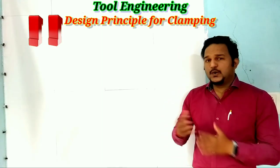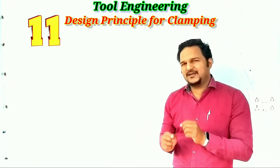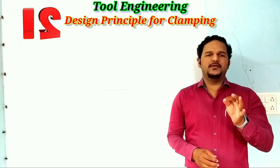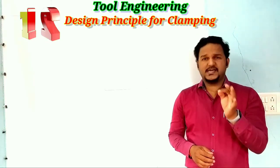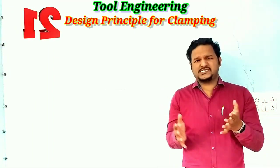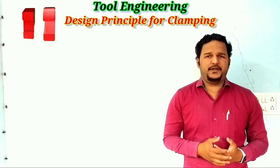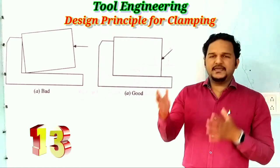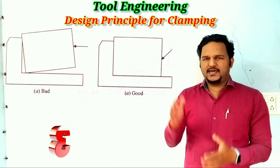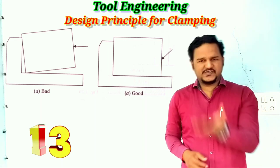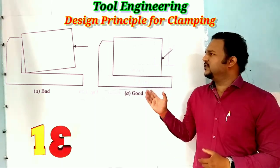Next design principle: the clamp should be designed to deliver the required clamping force when operated by the smallest expected force. Following that, the clamp should be strong enough to withstand the reaction imposed upon it when the largest expected operating force is applied. The last design principle: clamping pressure must be directed towards the point of support; otherwise the work will tend to rise from its support, as shown in this figure.